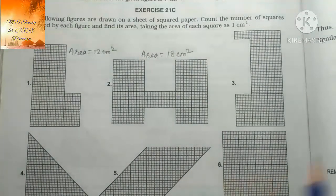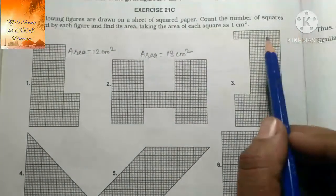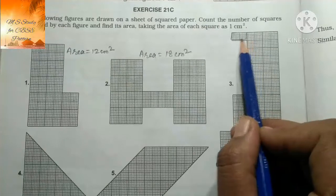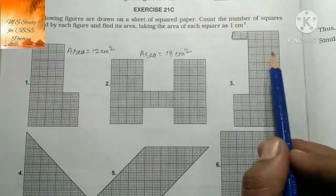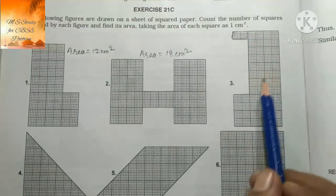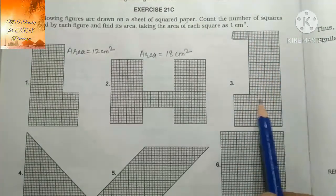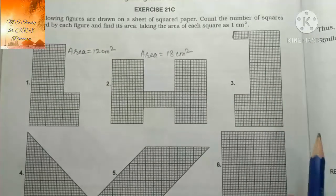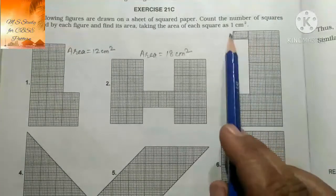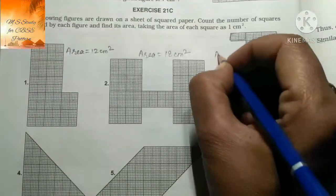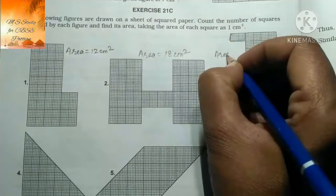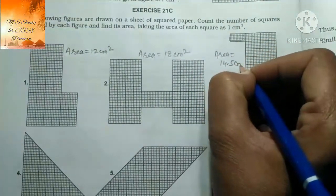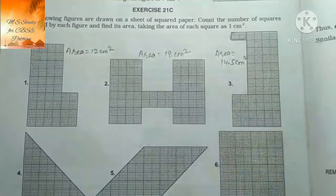अब next वाले का find करते हैं। इस वाले को अलग से count करेंगे because यह half है। Complete squares count करने पर 14 आते हैं, और 0.5 half square है। यानि कि area equals to 14.5 cm²।